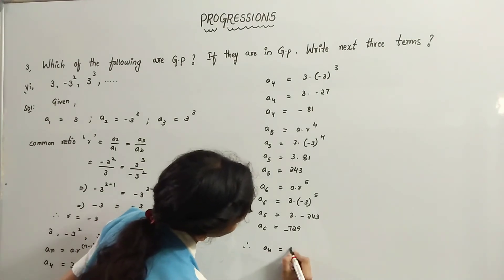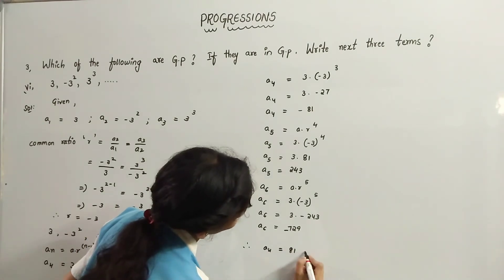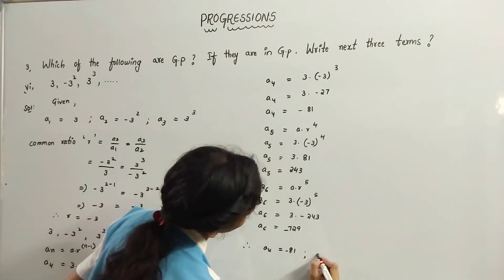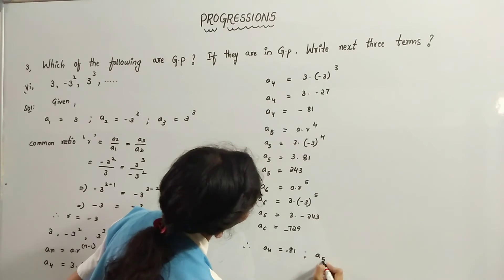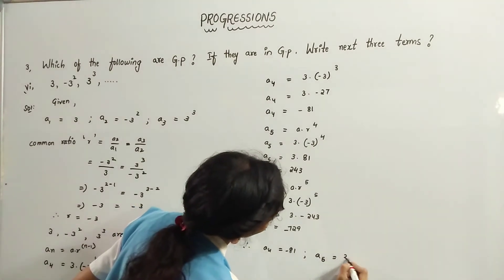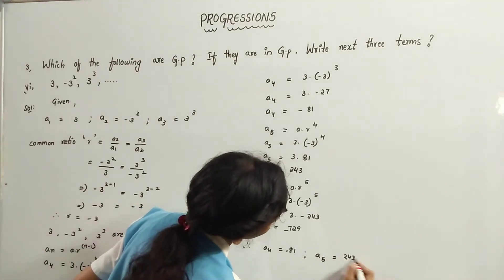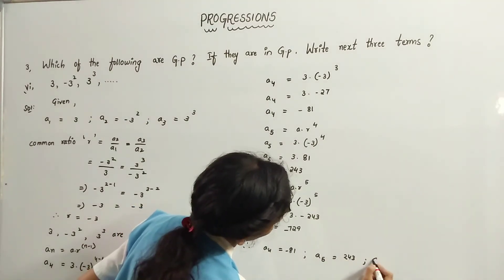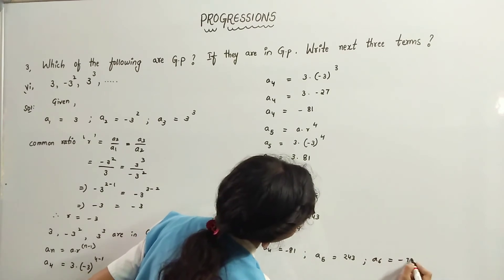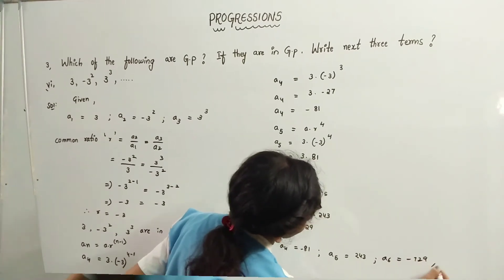Therefore, A4 equals minus 81, A5 equals 243, and A6 equals minus 729.